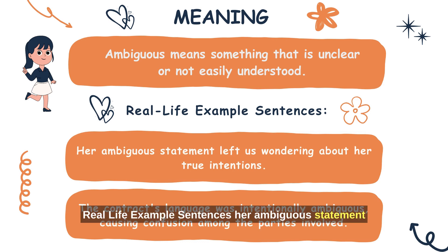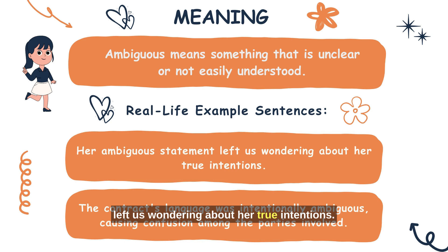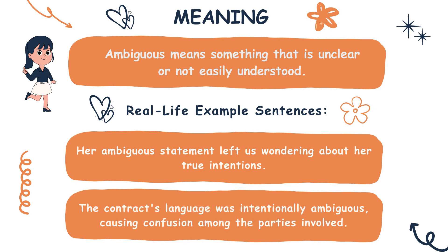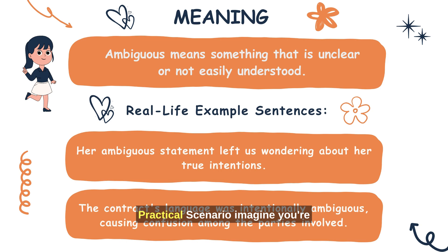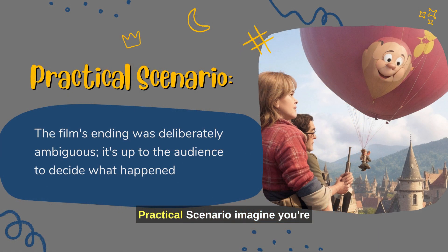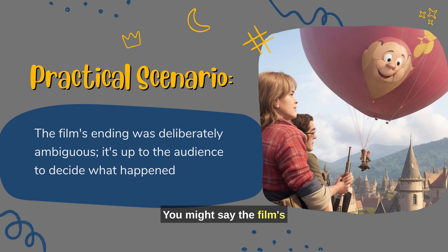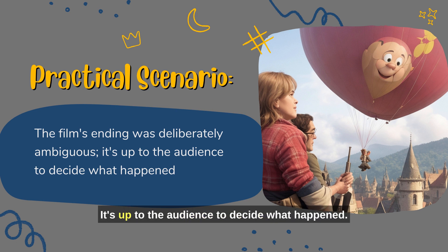Real-life example sentences: Her ambiguous statement left us wondering about her true intentions. The contract's language was intentionally ambiguous, causing confusion among the parties involved. Practical scenario: imagine you're discussing a movie plot. You might say, 'The film's ending was deliberately ambiguous — it's up to the audience to decide what happened.'